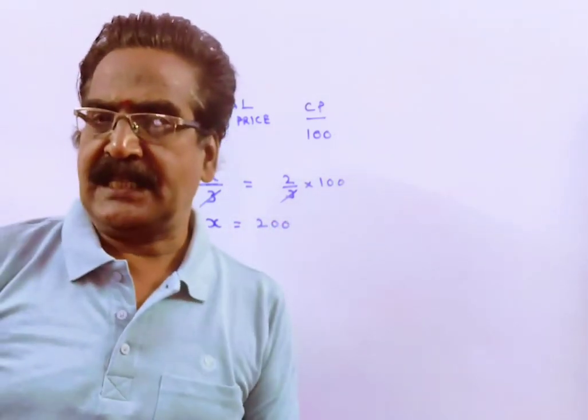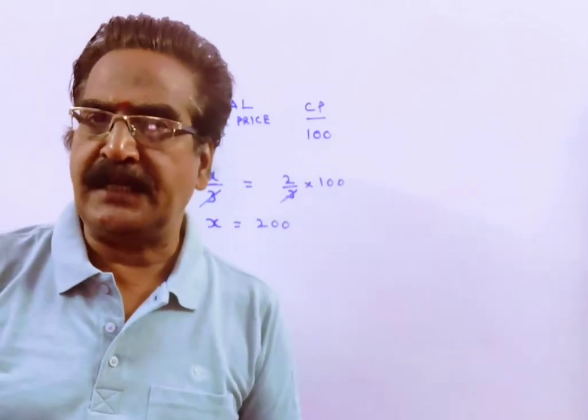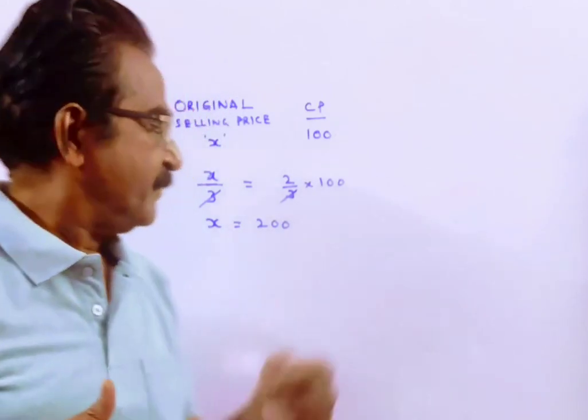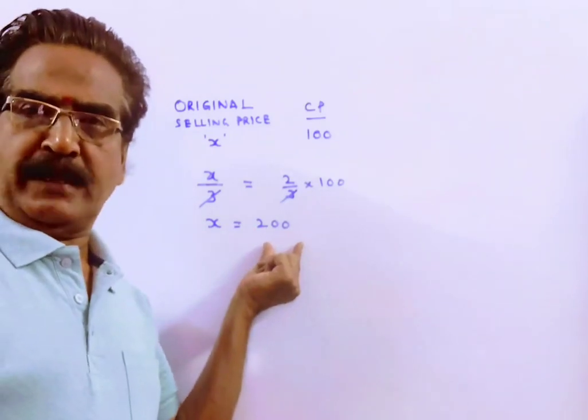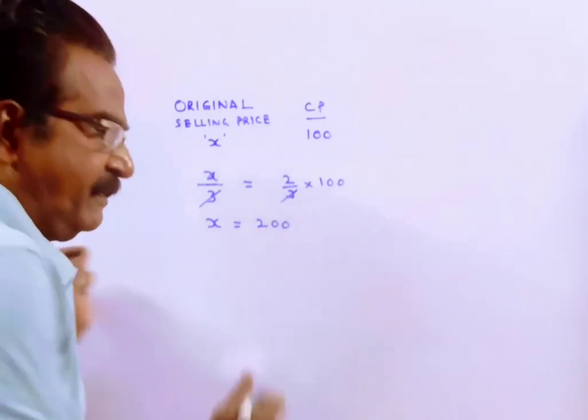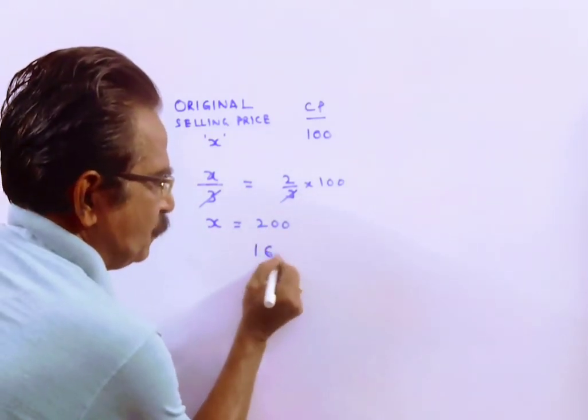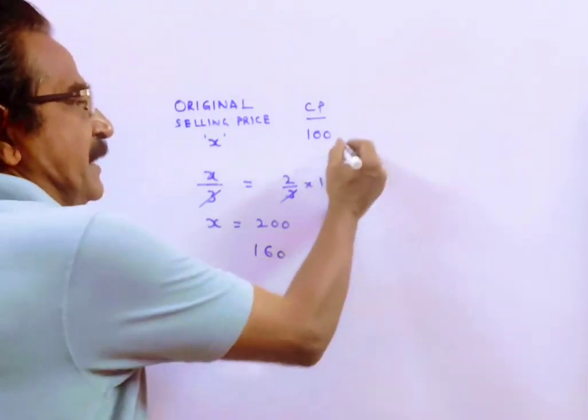It is asked that if the article is sold at 80 percent of its original selling price. Original selling price is 200. 80 percent of 200 is 160. So if it is sold at 160, what is the profit percent?